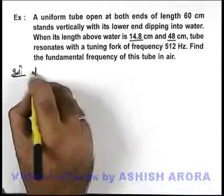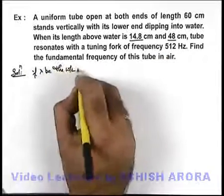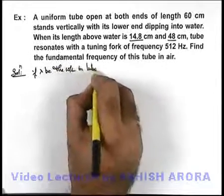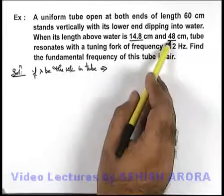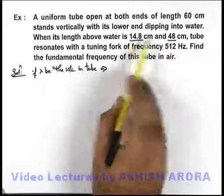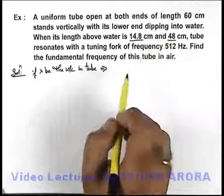So we can say, if lambda be the wavelength in tube, as we can see, the second length is not exactly 3 times the first resonating length, that means we need to account for the end correction also.